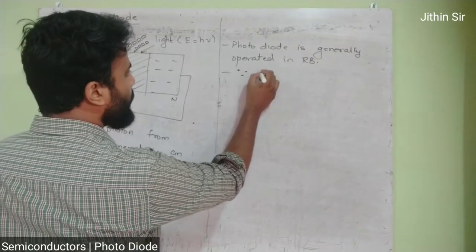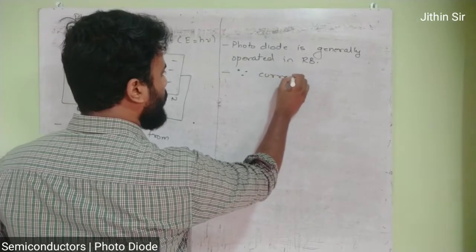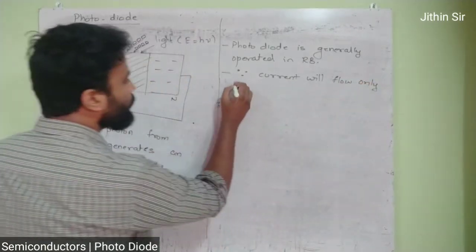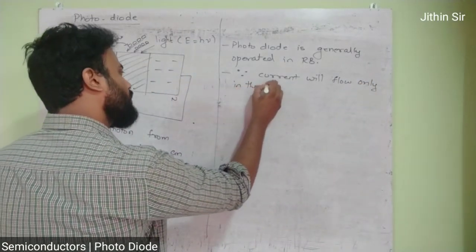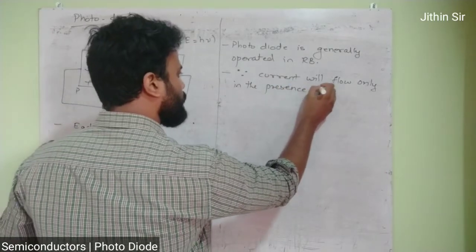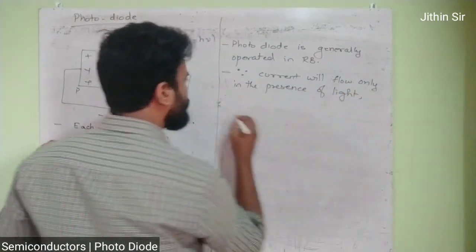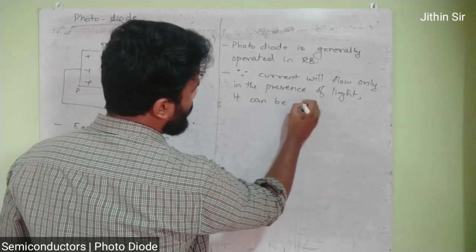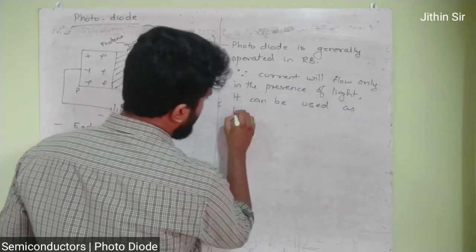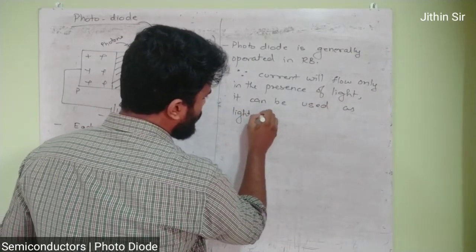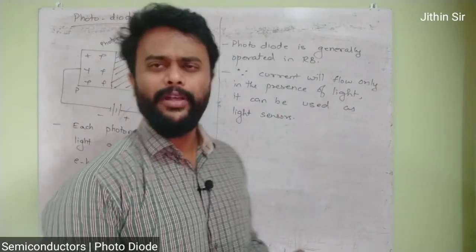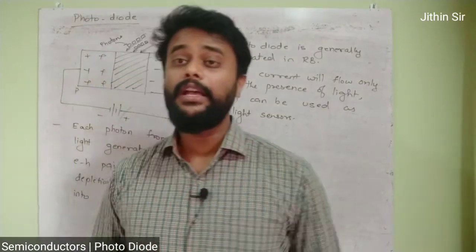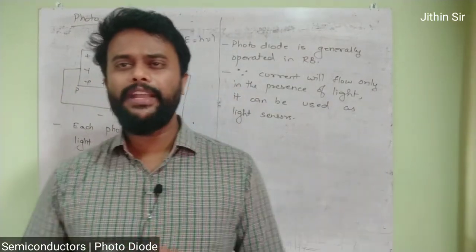Since current will flow only in the presence of light, photo diode can be used as a light sensor۔ Light sensors بہت سارے جگہوں پر ہوتی ہیں — ہمارے telephones میں light sensors ہوتے ہیں، ہمارے telephone کے سب سے اوپر والے section میں light sensors ہوتے ہیں۔